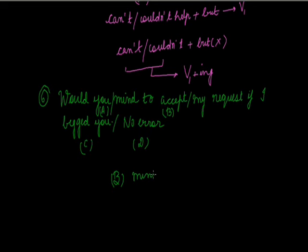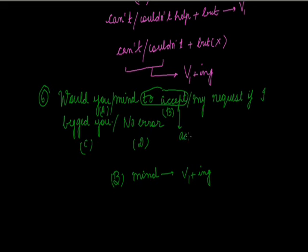The verb 'mind' will not take 'to + V1'. Instead, it takes V1+ing — the gerund form, which works as a noun. So instead of 'to accept', you will use 'accepting': 'Would you mind accepting my request?'